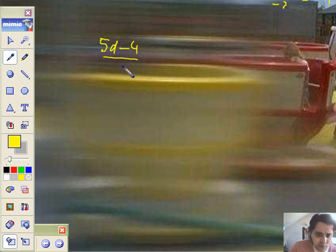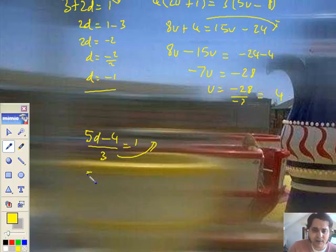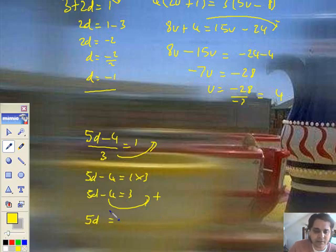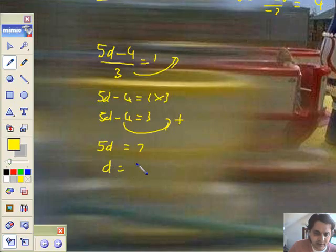So 5d minus 4 all over 3 equals 1. You know, take the 3 over and multiply. So 5 lots of d minus 4 equals 1 times 3. So 5d minus 4 equals 3. The minus 4, take it over and plus it.